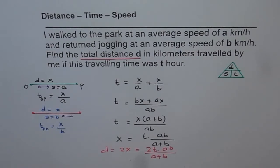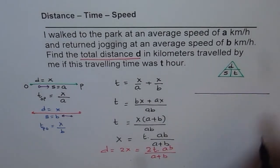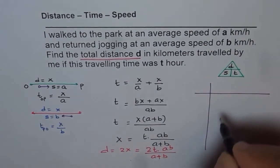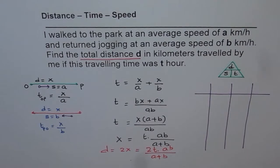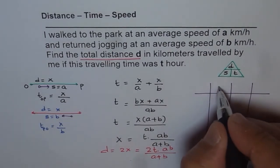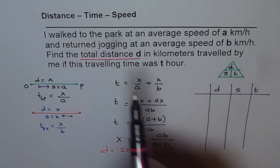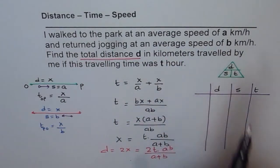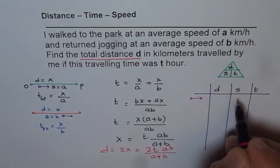I purposely left space on the right side to show you an alternate way of doing the same thing. I prefer to solve distance-time-speed problems using a table. So let's make a table with three columns: distance, speed and time. We are redoing the same question — I walk to the park at an average speed of A km per hour.